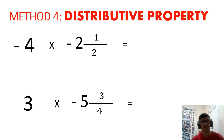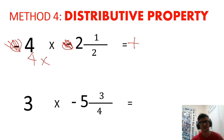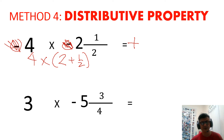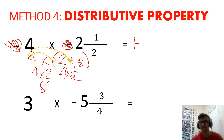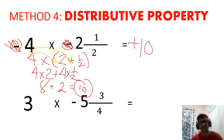Method 4 is the distributive property. Since you know you have the same signs, your answer will be positive, so you can ignore the signs for now. Think of this as 4 times (2 plus 1 half). Distribute: 4 times 2 is 8, and 4 times 1 half is half of 4, which is 2. Add them up: 8 plus 2 is 10. We identified the sign already — it's a positive 10.